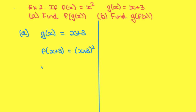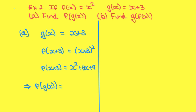So f of x plus 3 is equal to x plus 3 squared, which equals x squared plus 6x plus 9. Therefore, f of g of x is equal to x squared plus 6x plus 9.